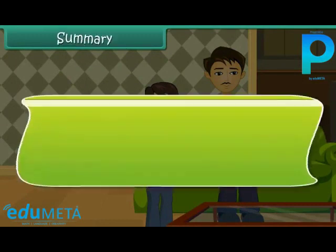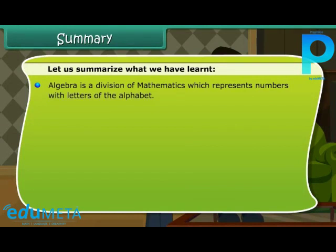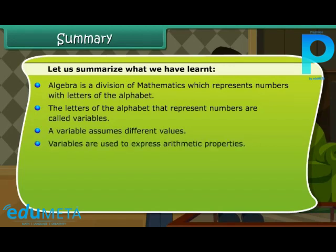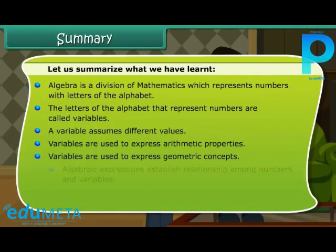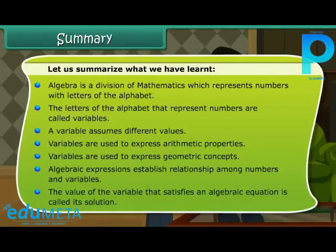Summary: Algebra is a division of mathematics which represents numbers with letters of the alphabet. The letters that represent numbers are called variables. A variable assumes different values. Variables are used to express arithmetic properties and geometric concepts. Algebraic expressions establish relationships among numbers and variables. The value of the variable that satisfies an algebraic equation is called its solution.